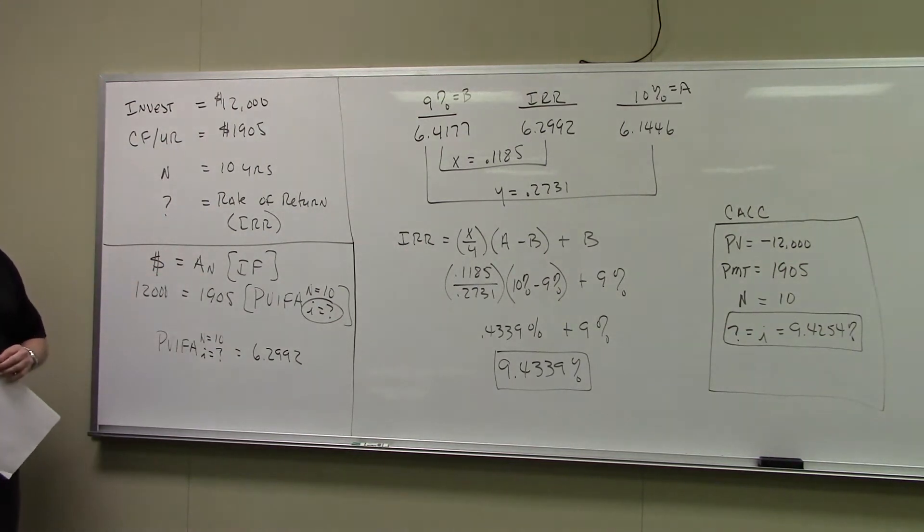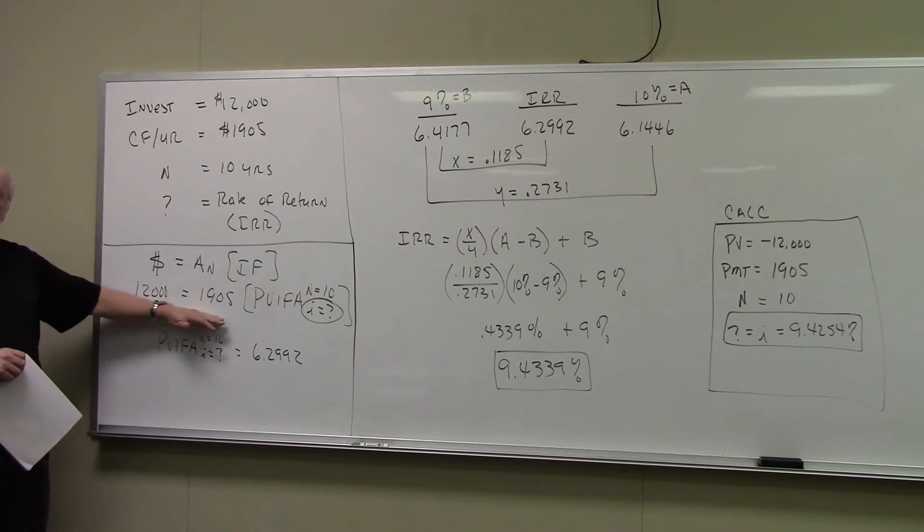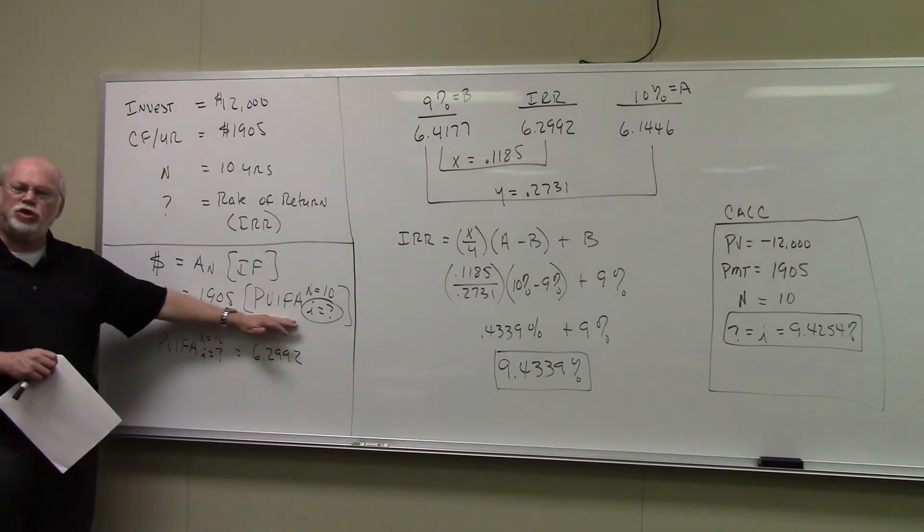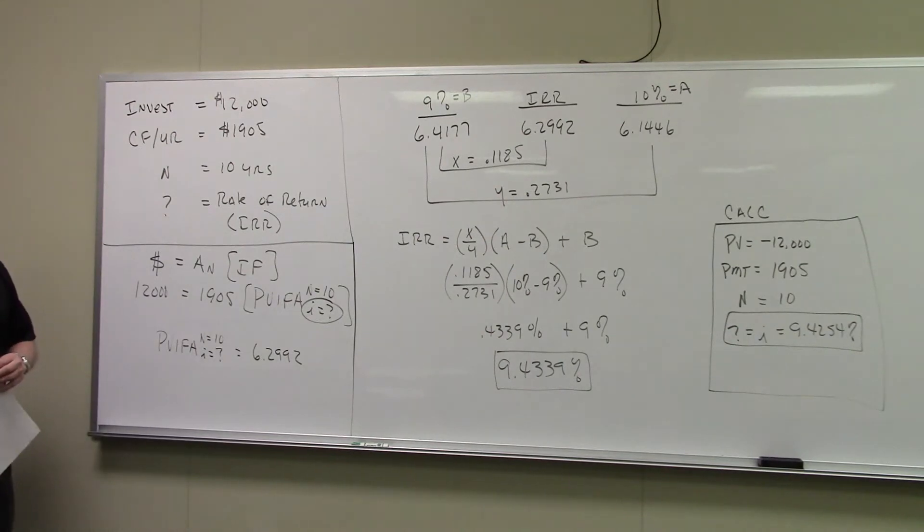Set up your general equation for annuities. The big dollar amount is $12,000. The value of the annuity is $1,905. Big dollar amount is at the beginning of the annuity stream, so we use PVIFA. N is always equal to the number of payments, the number of annuity payments. One a year for 10 years, N is equal to 10.